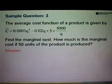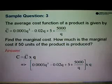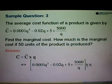So find the marginal cost. How much is the marginal cost if 50 units of the product is produced? So what we need to do first is to convert the average cost to cost. So the formula is cost is equals to average cost times quantity. So from here we will take the function average cost function and then multiply by q.